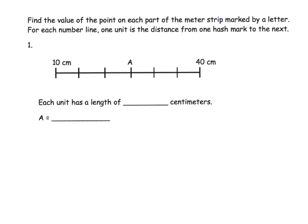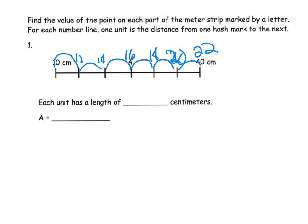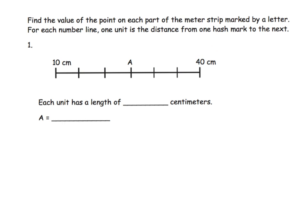If we say going from here to here is two, that would make this 12, then 14, then 16, then 18, then 20, then 22. That doesn't work because we wanted the ending to be 40, but we reached the end and we're only at 22. So going up by twos is too small.